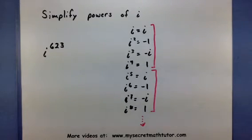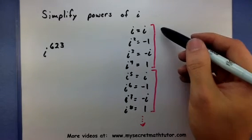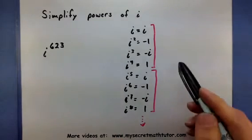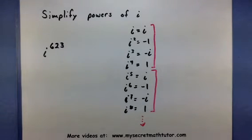Now, if I want to know what i to the 623 is, that helps me out a little bit. But you can see that I'd have to go for quite some time before I ever reach 623. So what I basically want to know now is, where does 623 fall in my pattern? Well, to do this, I can examine the remainders.